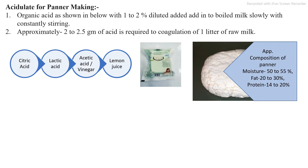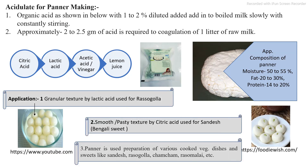The approximate composition of paneer contains 50–55% moisture, 20–30% fat, and 14–20% protein. These compositions specifically depend on the initial type of milk used and its fat and acidity percentage. The main application of paneer: if lactic acid is used, a granular texture paneer is produced, which is used for the production of rasgulla. If acetic acid is used as the acidulant, a smooth texture paneer is produced, used for Bengali sweets like peda. Paneer is also used for cooked vegetable dishes and various sweets.